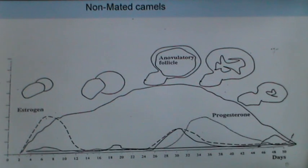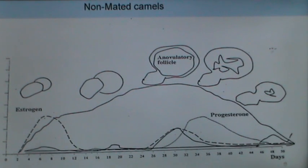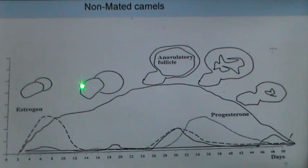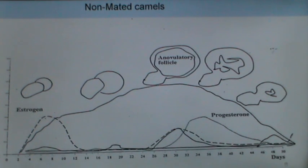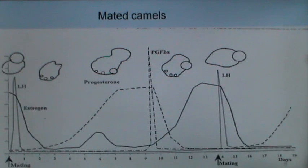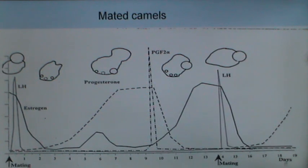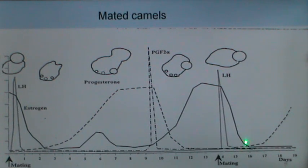In a non-mated camel, the anovulatory follicle regresses and the camel returns to estrus very shortly. Whereas in mated camels, there is an LH surge in response to mating, formation of a CL, and increasing plasma progesterone for a few days. If the animal has not become pregnant, there will be another follicle growth and mating will result in formation of a new CL. Camel reproduction is quite different from most other domestic animal species.